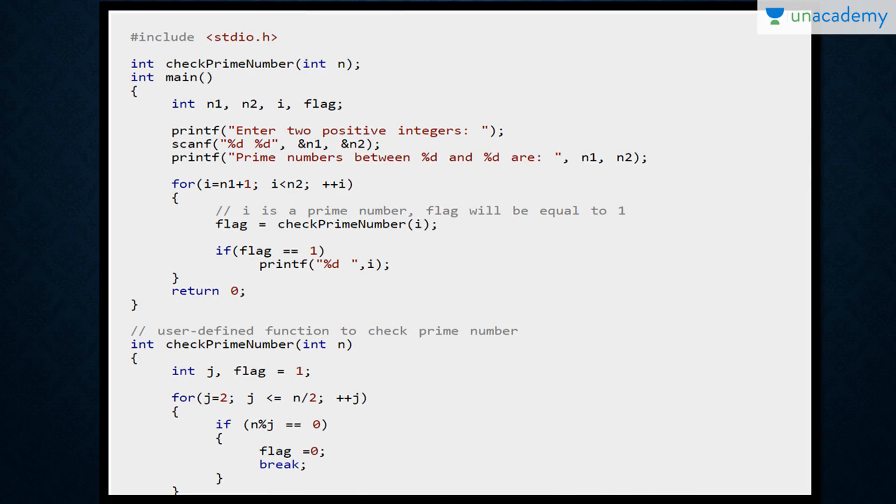Let's have the first program. Hash include stdio.h. We have a function declared check prime number. This program will check whether the number is prime or not. In main, we have two positive integers n1 and n2. Between n1 and n2, we'll check which numbers are prime, from n1 plus 1 to n2. We're checking excluding them. For each number, we check if it's prime using the check prime function.